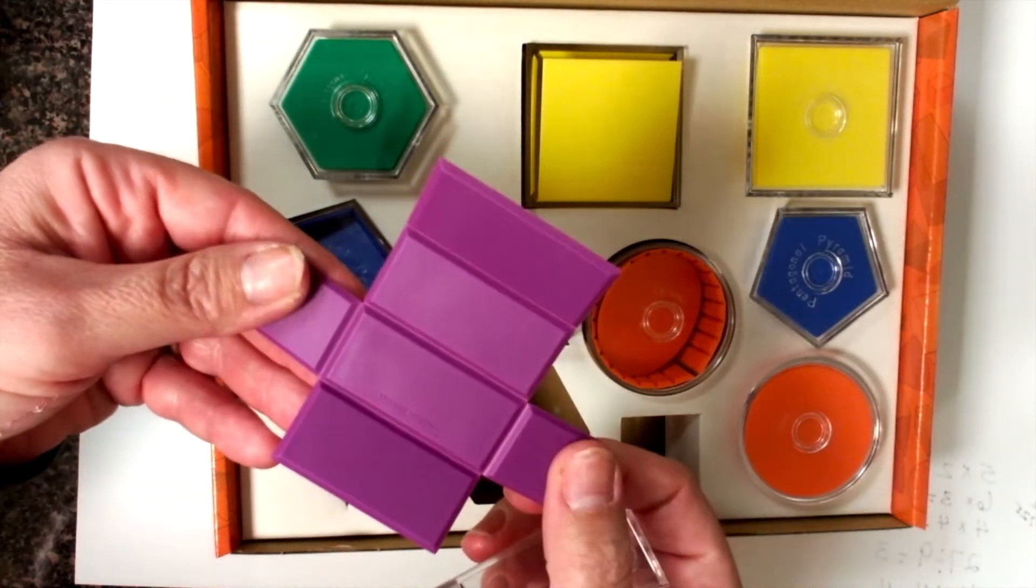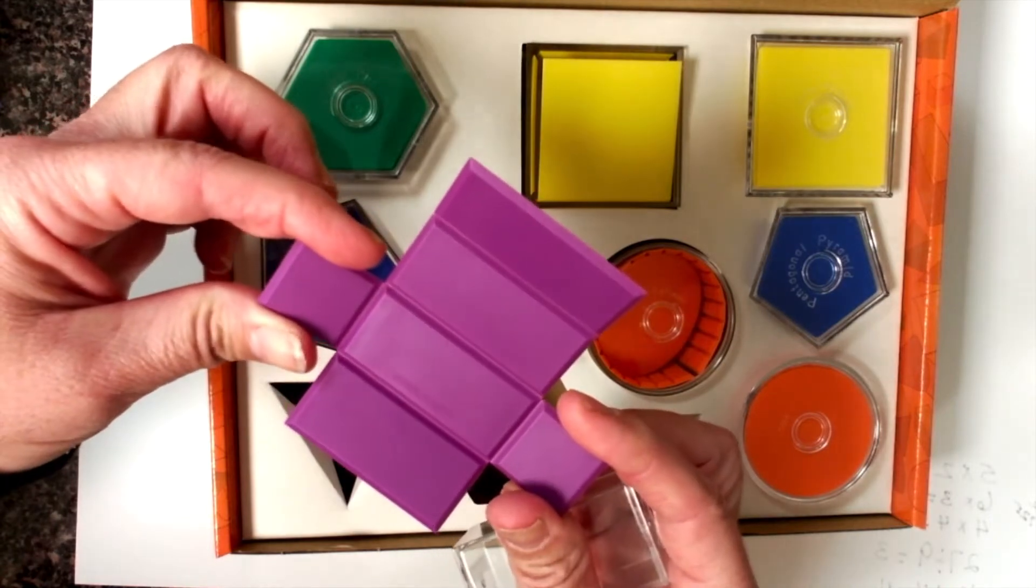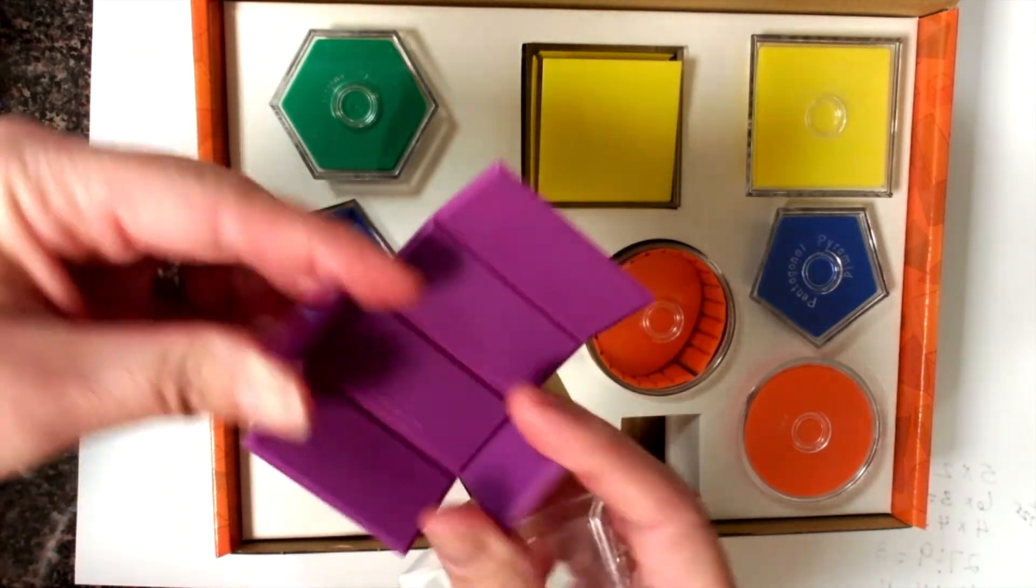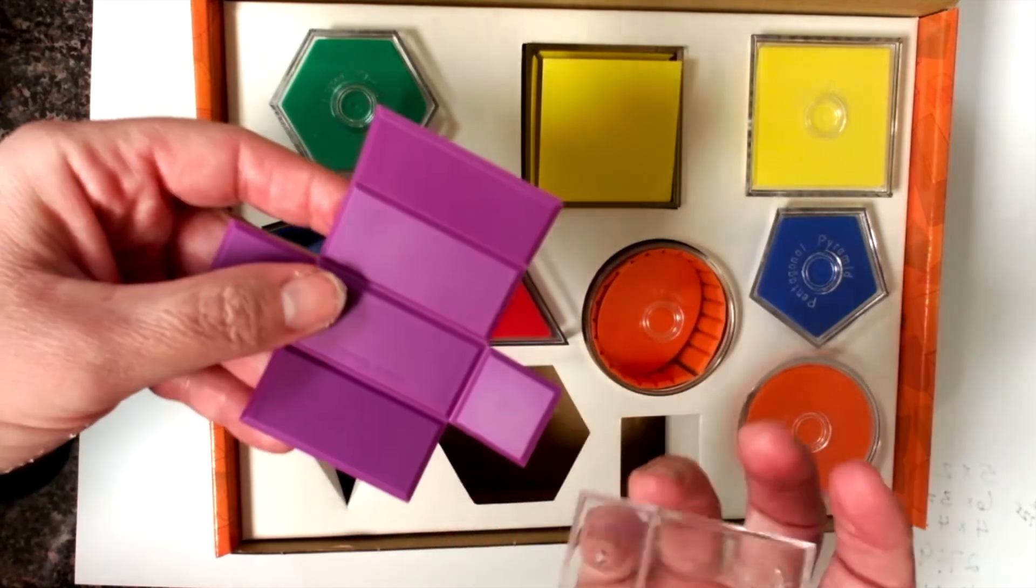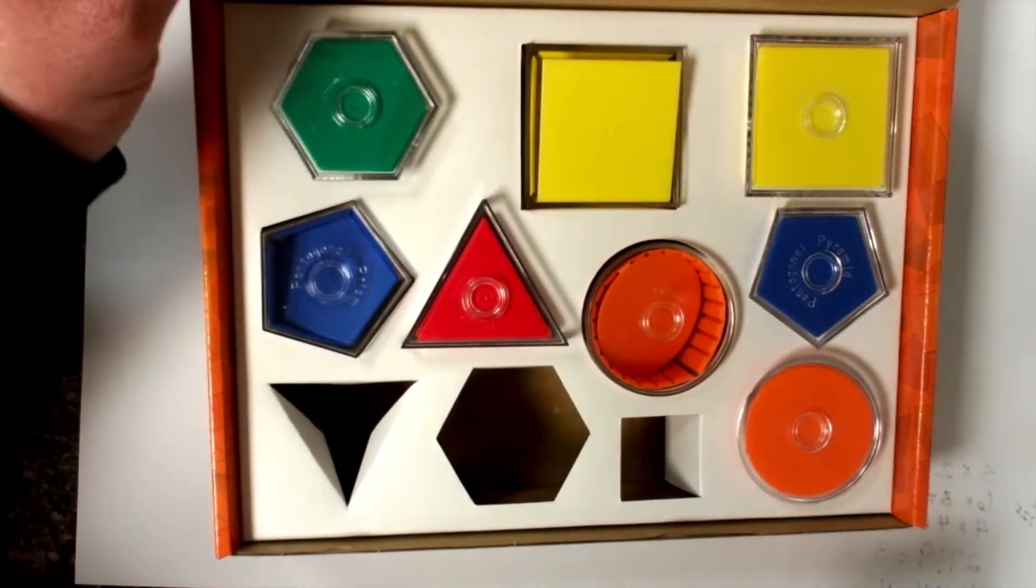You can see that this is a rectangular prism. You can see that it has one, two, three, four rectangles and two squares. That makes up the net and you can talk about that.